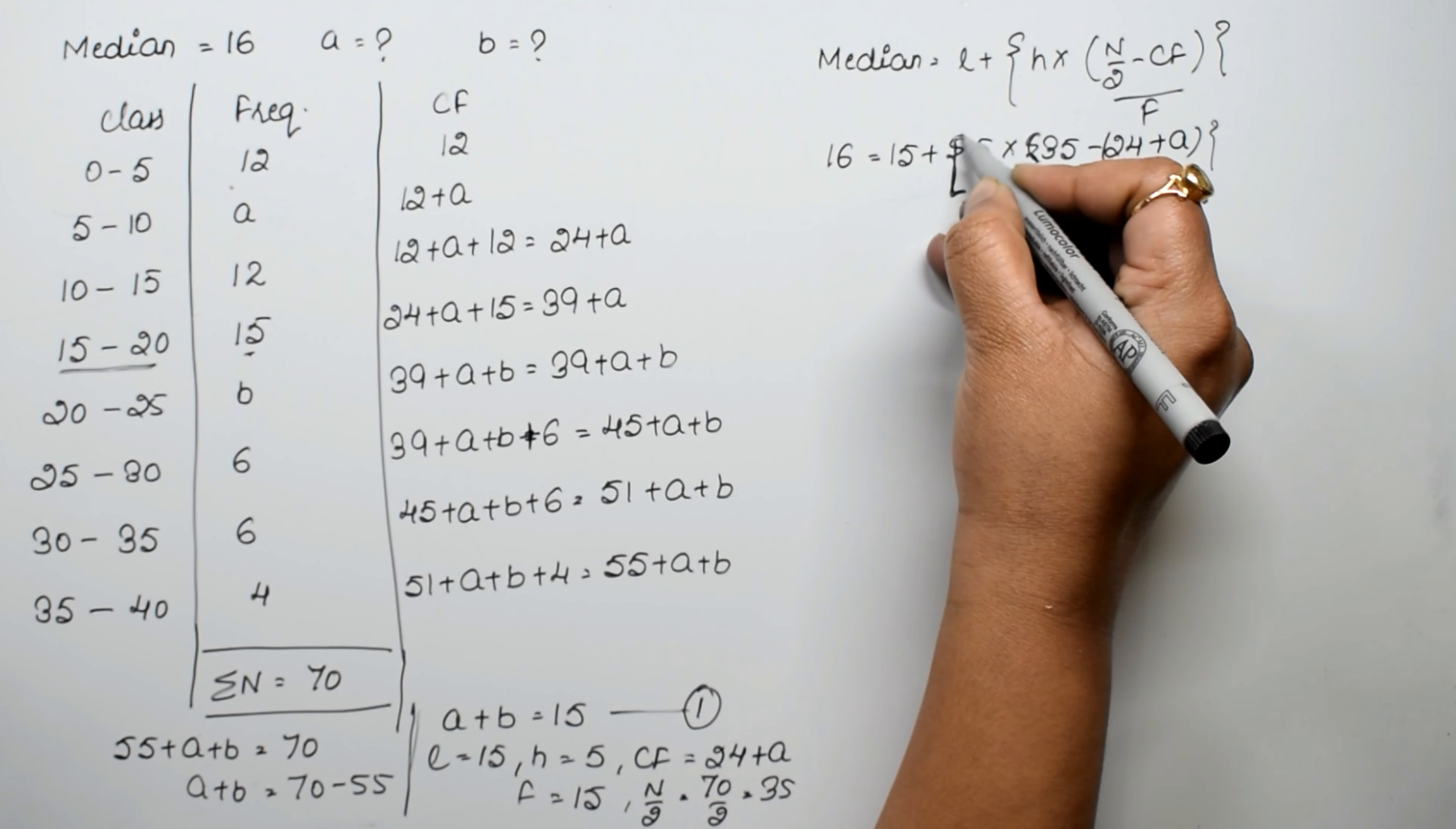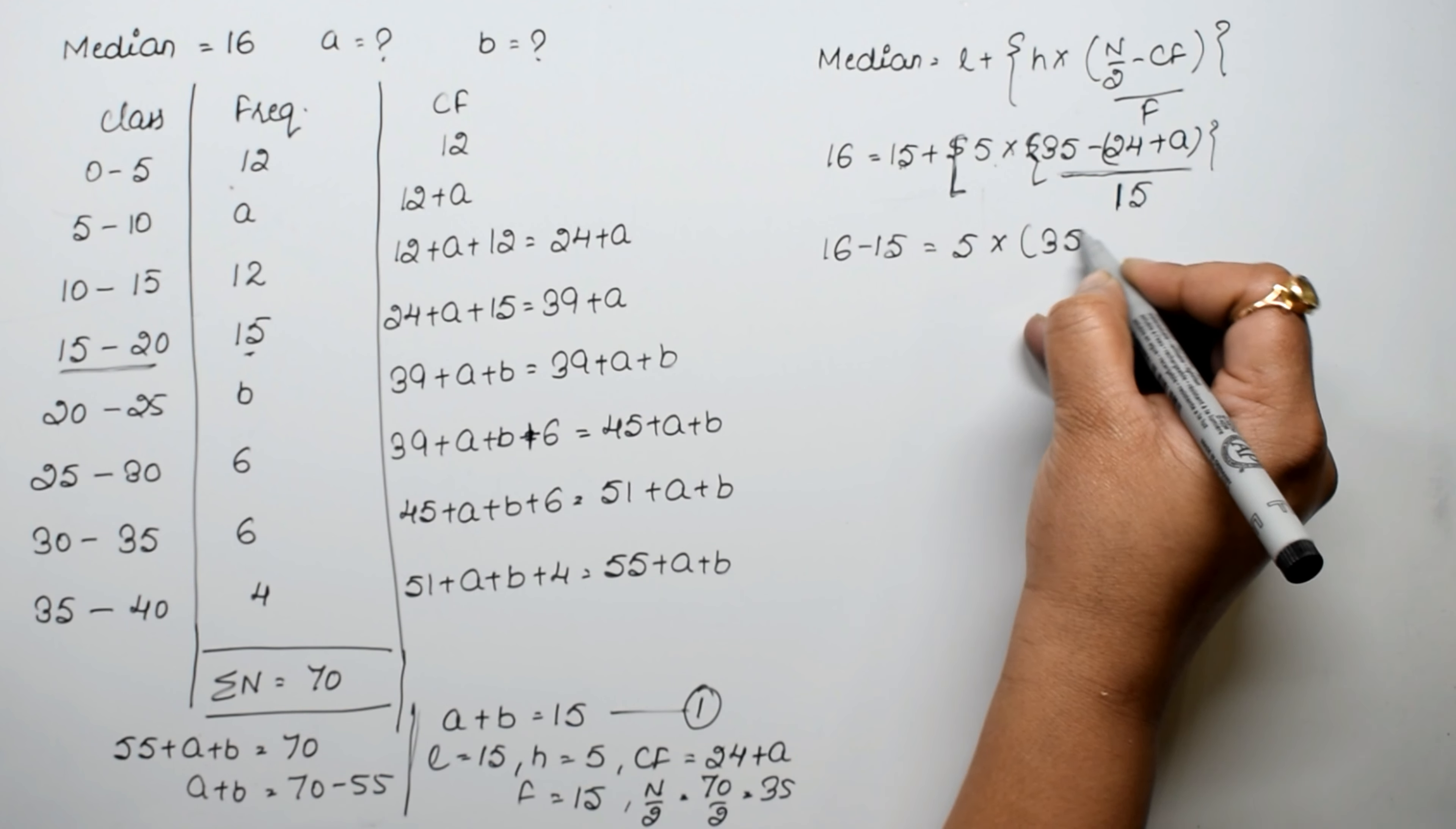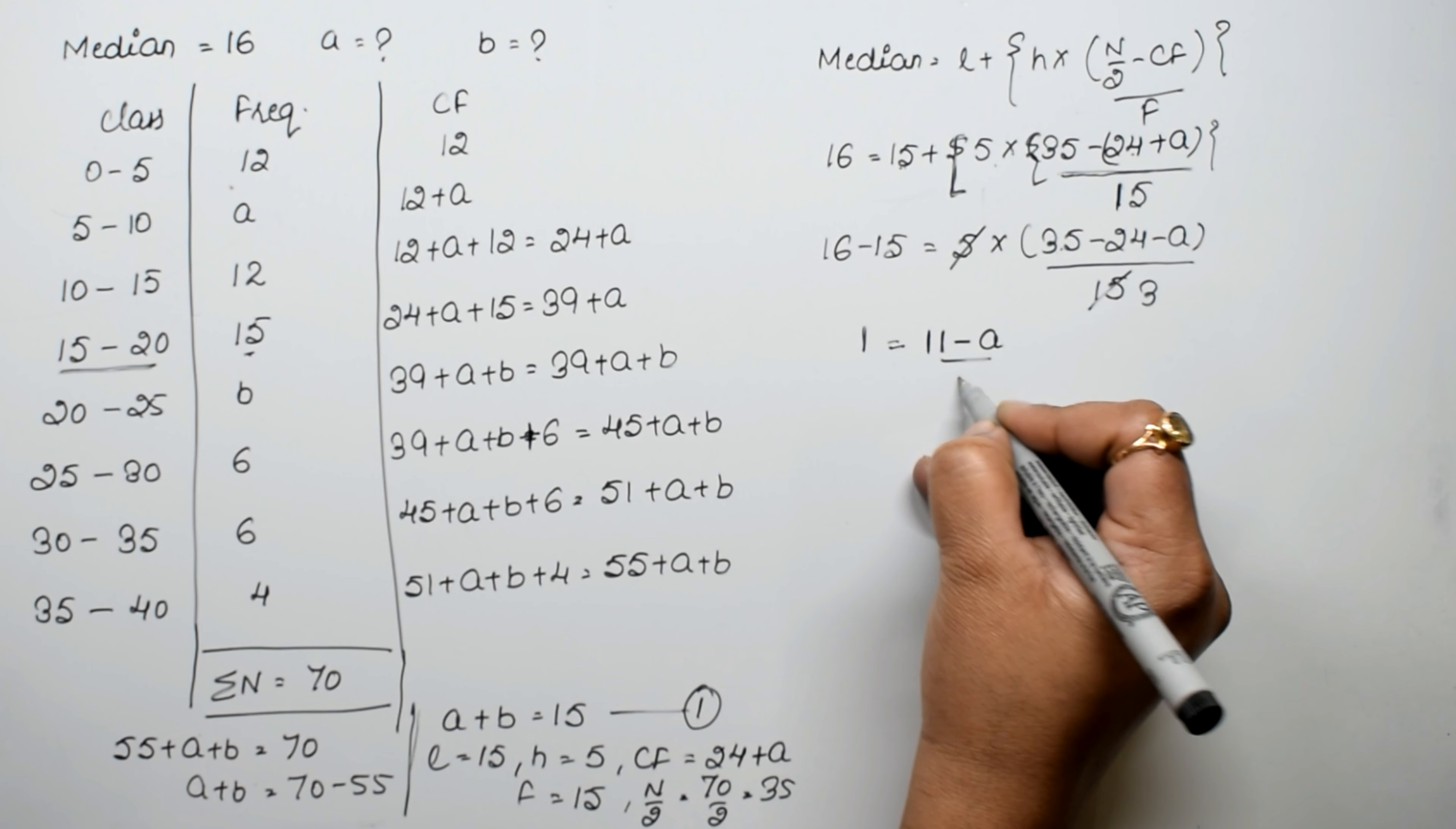Substituting into the formula: 16 equals 15 plus 5 times [(35 minus 24 minus A) divided by 15]. So 16 minus 15 equals 5 times [(11 minus A) divided by 15]. Simplifying: 1 equals (11 minus A) divided by 3. Cross-multiplying: 3 equals 11 minus A. Therefore A equals 11 minus 3, which is 8.